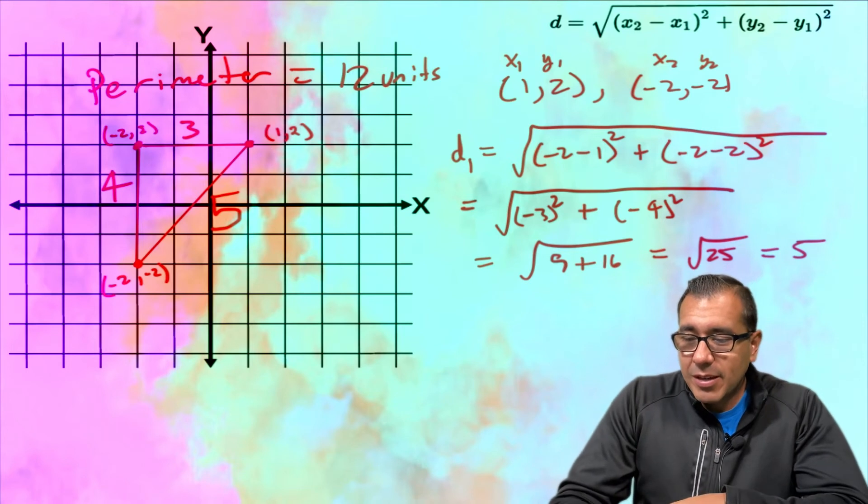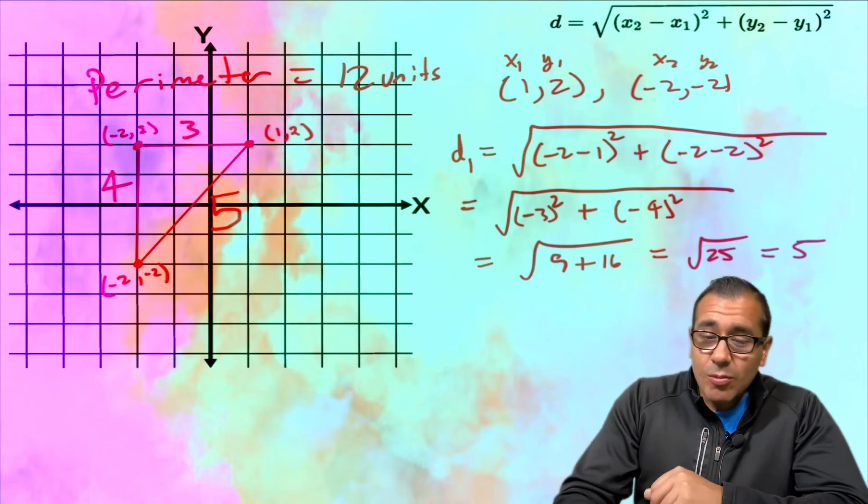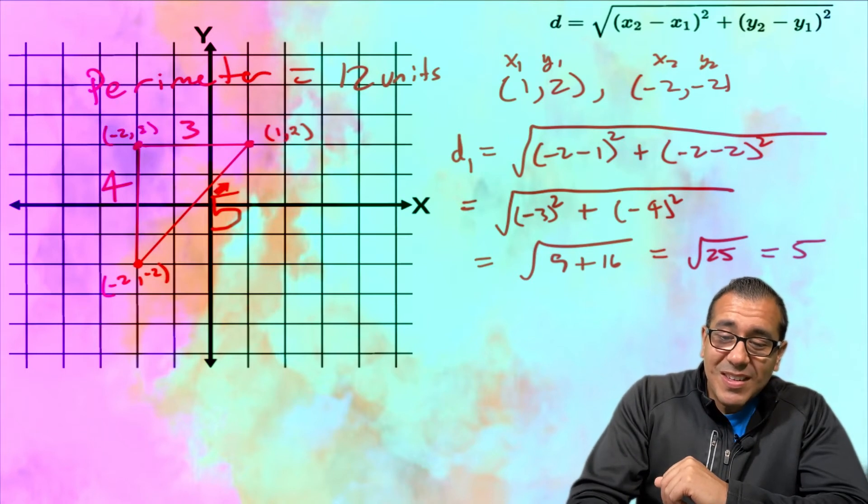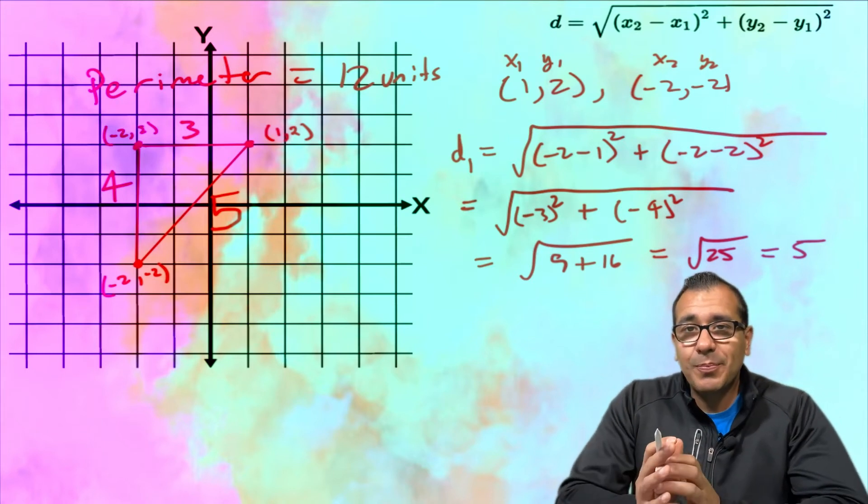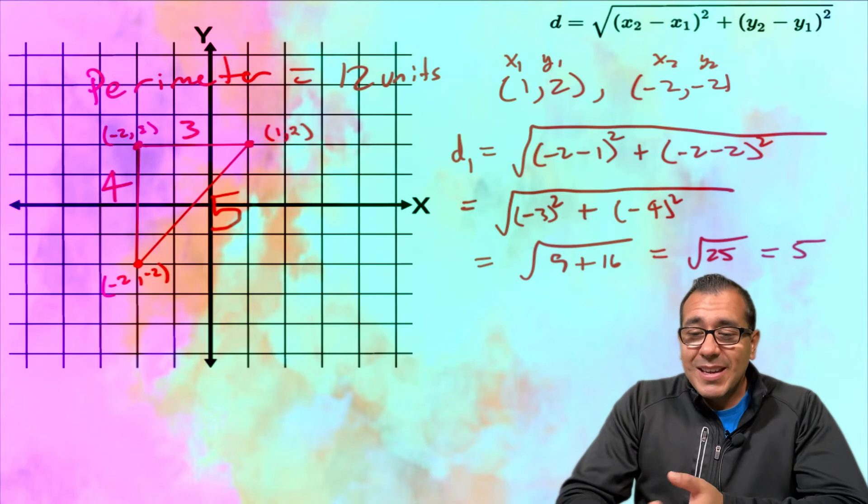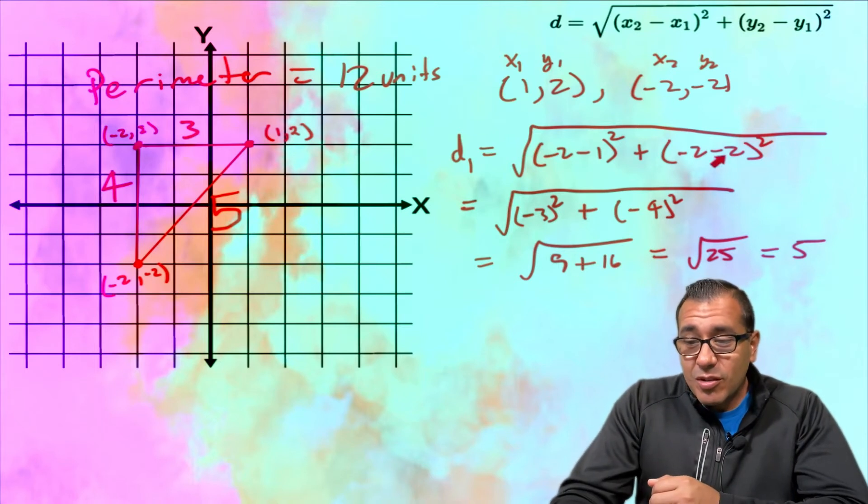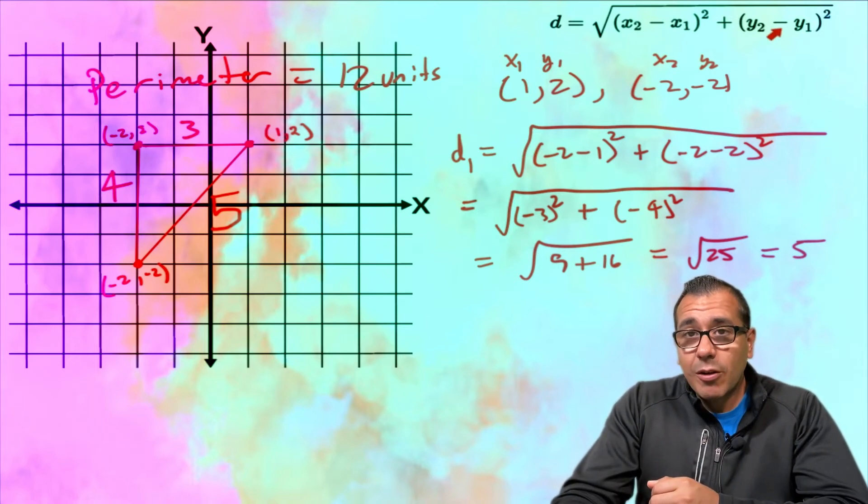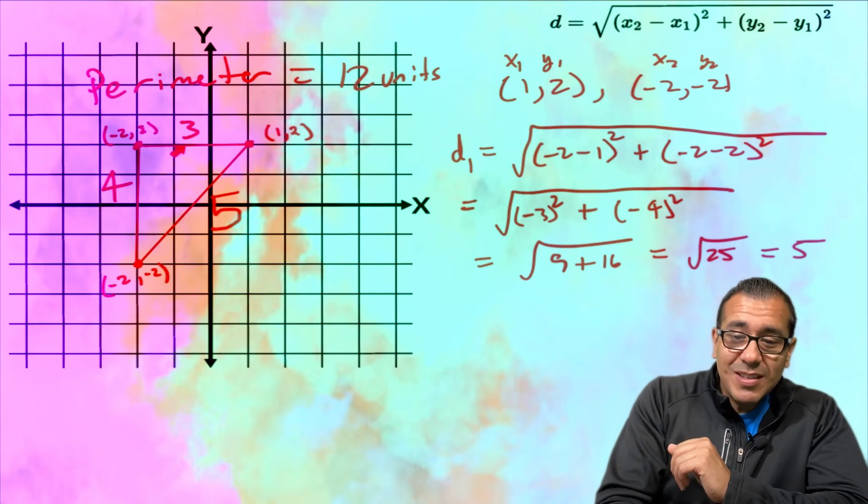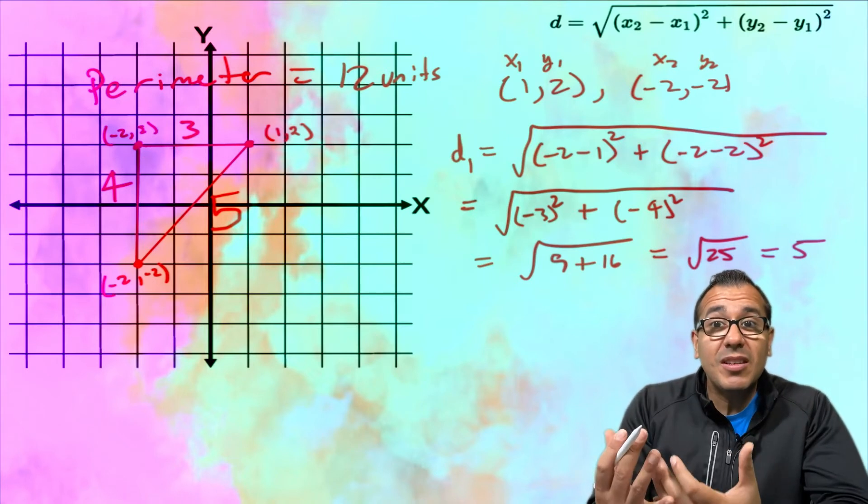And we're going to take the square root of 25, which is 5. So this represents the distance of this side that I called d1. And what I would do is I would use the same exact formula, the distance formula, to find the distance of this side and I would call that maybe d2.